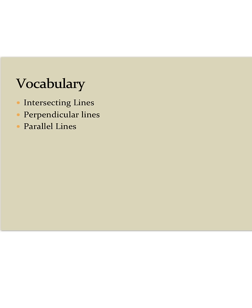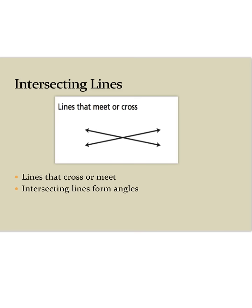Our vocabulary for today will be intersecting lines, perpendicular lines, and parallel lines. Intersecting lines are lines that cross or meet. Intersecting lines also form angles. Intersecting lines can sometimes be perpendicular as well. Here is an example of intersecting lines — these lines cross and they meet.